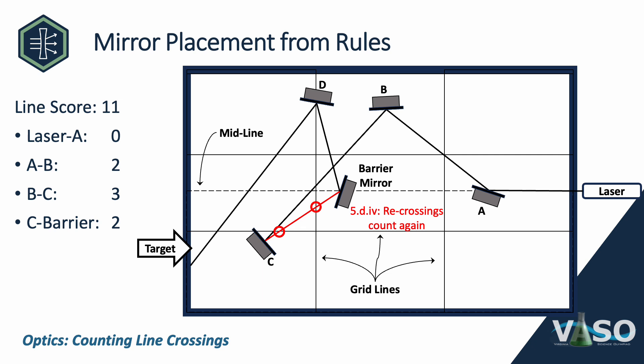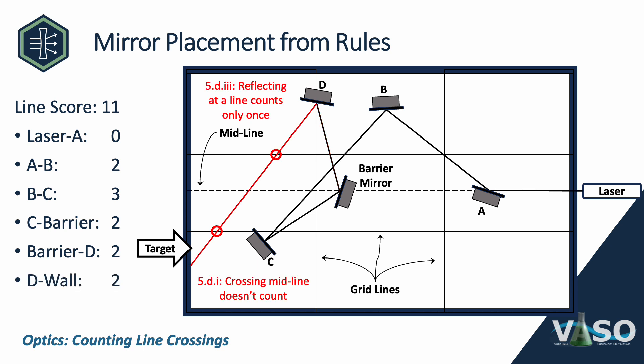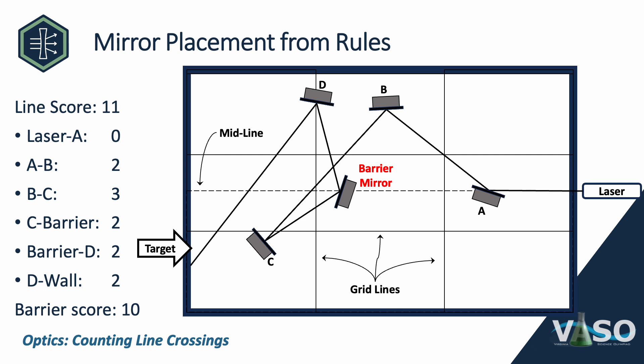Going from the barrier mirror to mirror D, we get two: crossing the top horizontal, and touching the left-hand vertical at mirror D counts another time. From D to the wall, we get two more — crossing the two horizontals on the way to the wall. Note that as the beam leaves mirror D, that does not count as a crossing because we already counted that crossing as the beam came into mirror D (that's special case three). Crossing the midline doesn't count. So we get a total of 11 line crossings, plus 10 for the barrier mirror, for a total of 21 out of 30 — which scores very well, though this is not an easy setup to achieve.